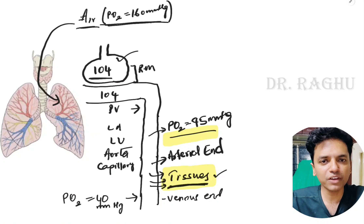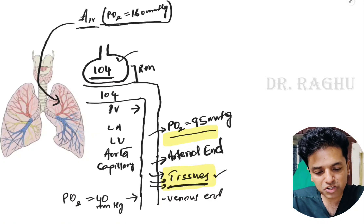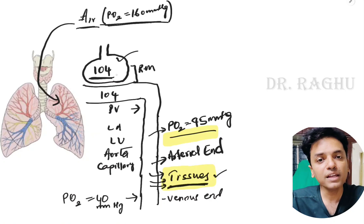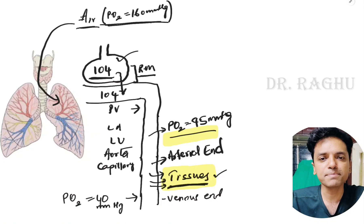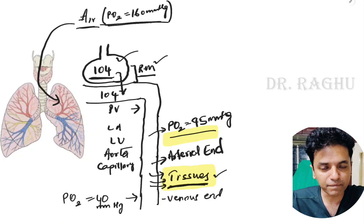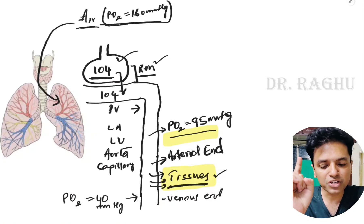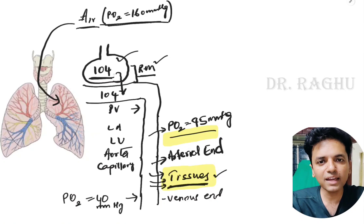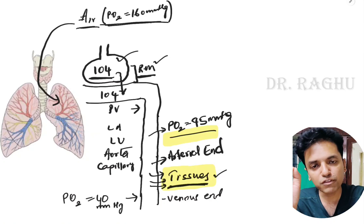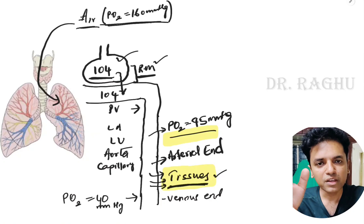Once oxygen at 104 mmHg is present in the alveoli, it diffuses across the respiratory membrane. So the third requirement is a normally functioning respiratory membrane. The first requirement is normal atmospheric pO2 of 160 mmHg, the second is properly functioning lungs and thoracic cage for alveolar aeration, and the third is an intact respiratory membrane for diffusion.